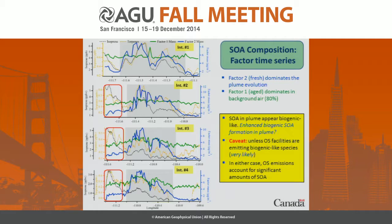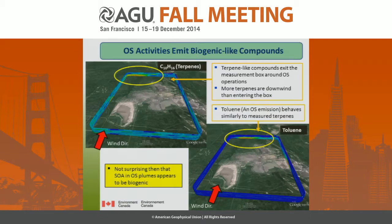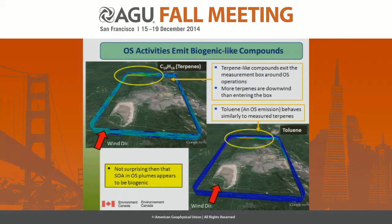But in either case, the oil sands emissions are accounting for this SOA, either through providing the precursor or providing the oxidant and NOx. I mentioned that oil sands activities can emit biogenic-like compounds. This is showing a box flight around one particular facility with PTRMS measurements. Toluene, which we know is an emission from the oil sands, is enhanced on the northern side — the red arrow indicates wind direction — so it's coming from this operation. And the same can be said for the terpenes and isoprene.